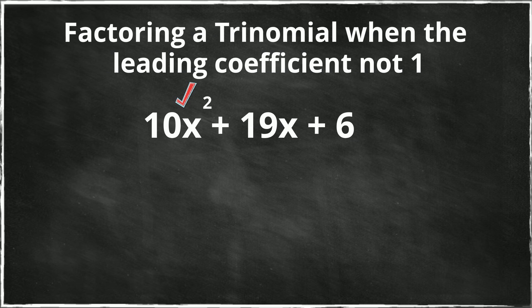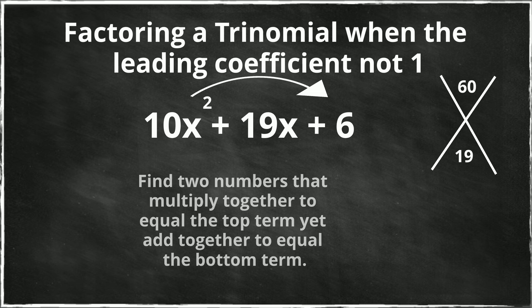The first step I think will help is to draw an x. And at the top of the x, you will place a times c and at the bottom you will place b. Okay, so 10 times 6 is 60 and then the middle term is 19. Now what you need to do is find two numbers that multiply together to equal the 60, and then add to equal the bottom of the x.